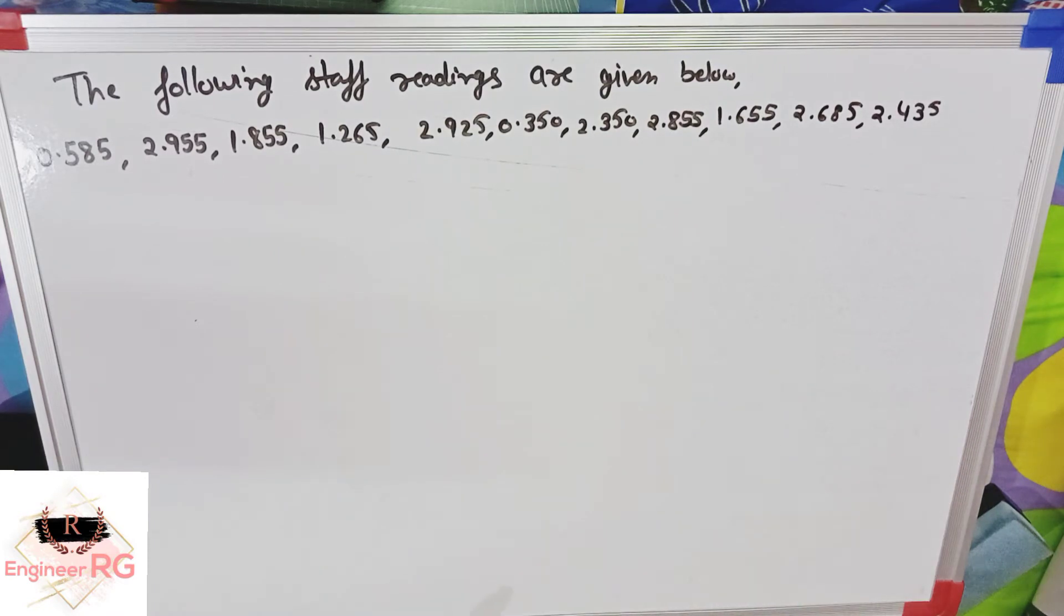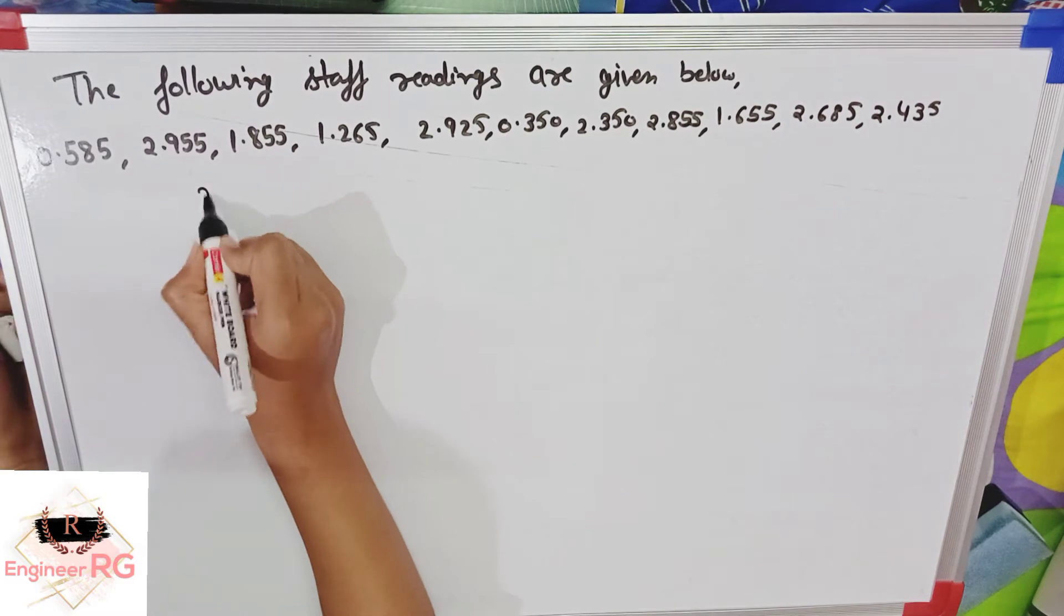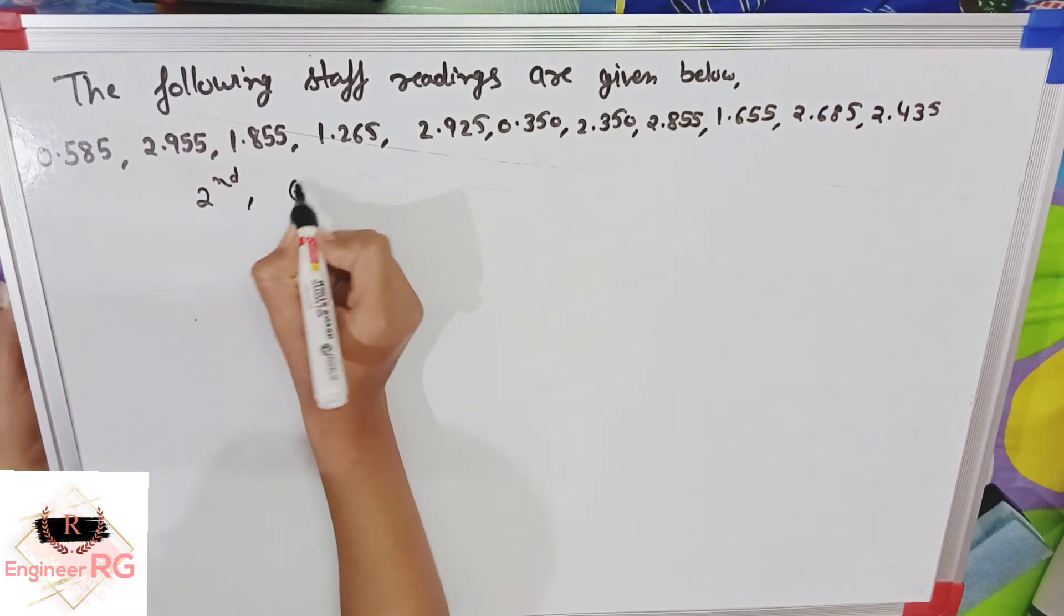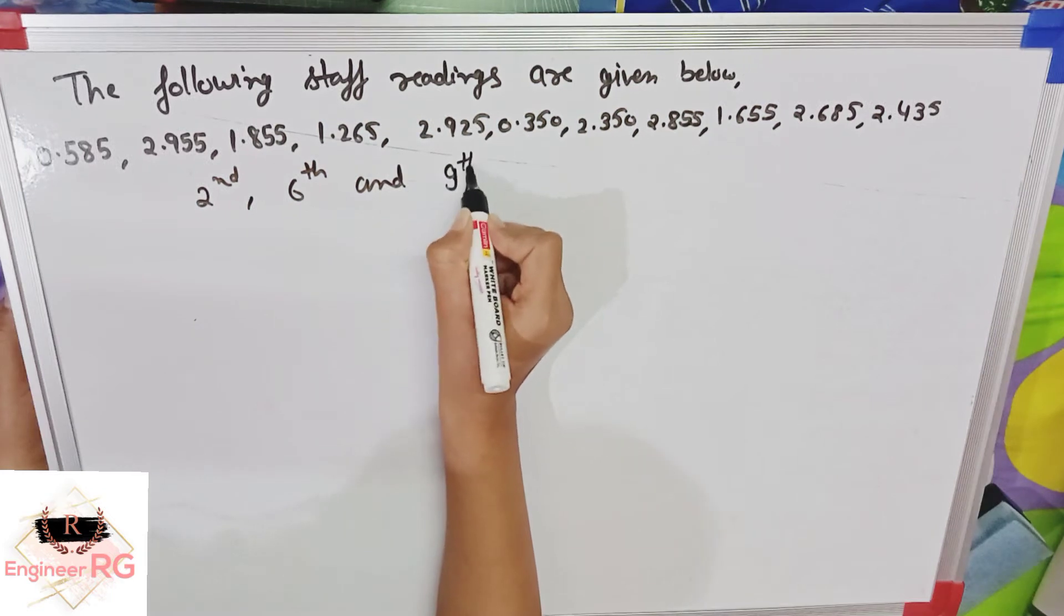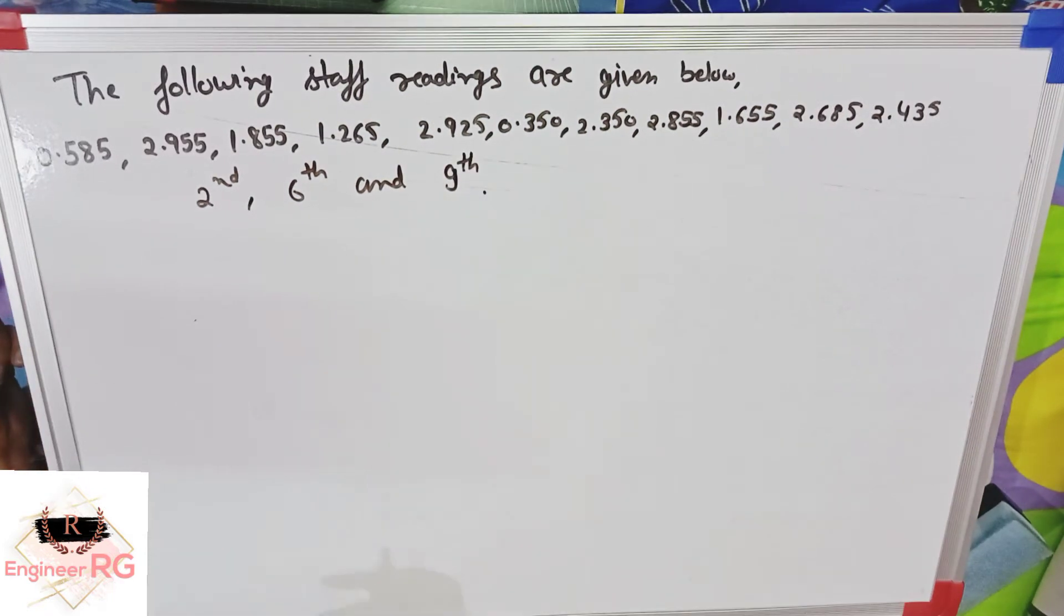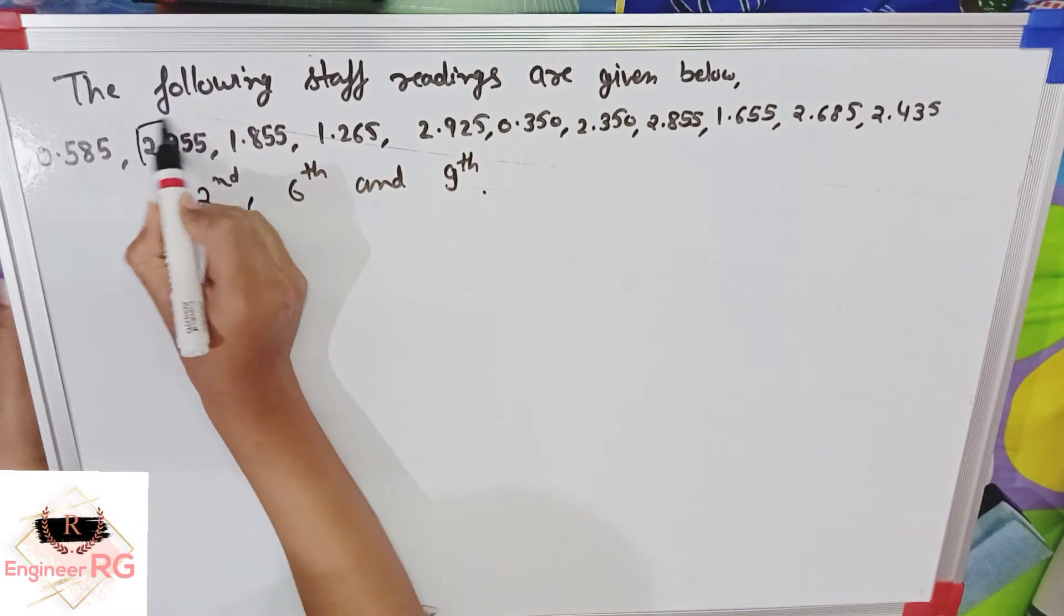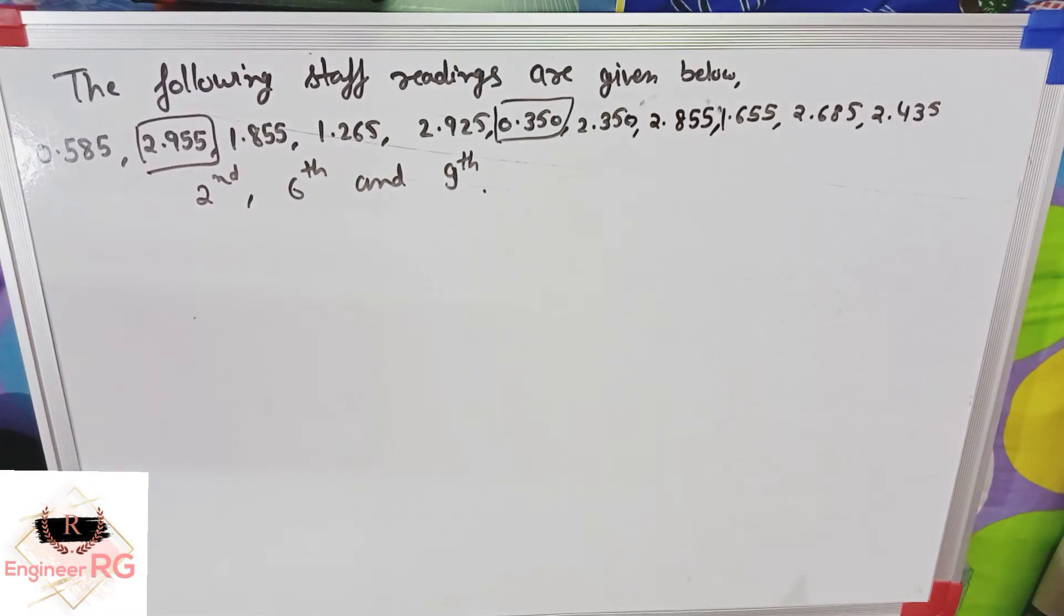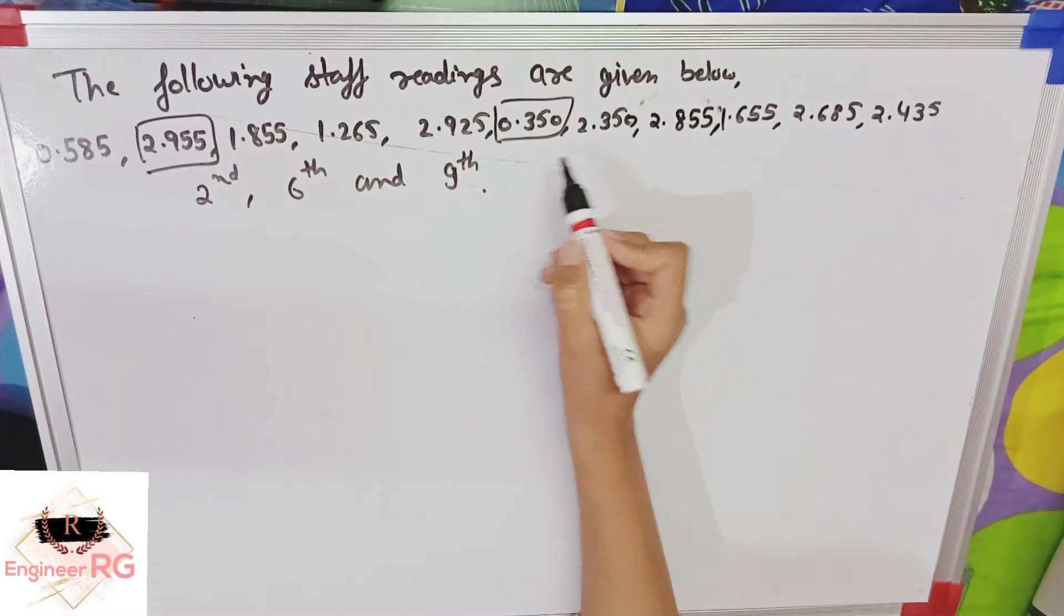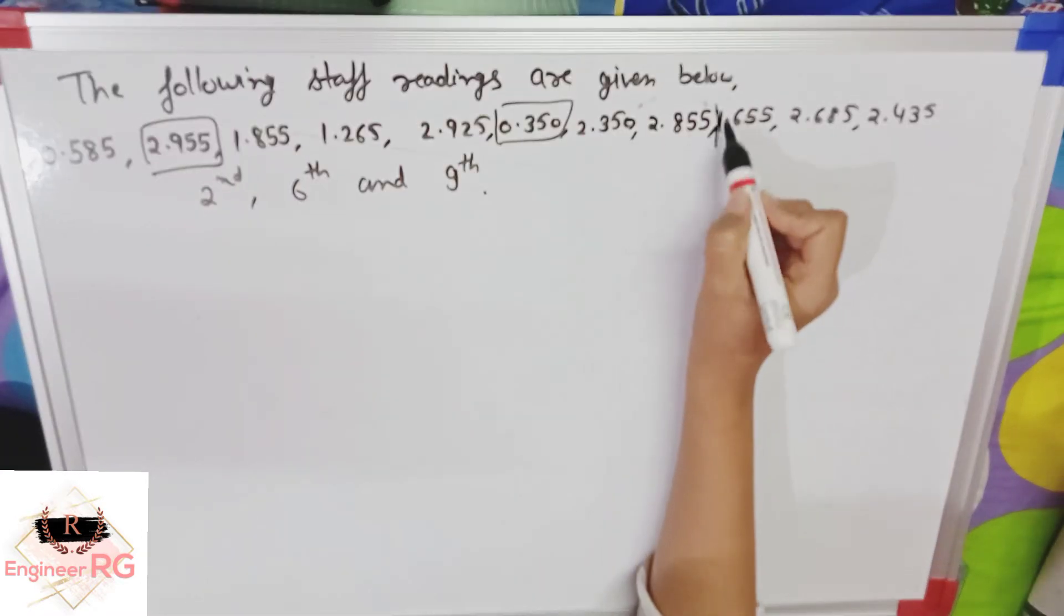Now, let's see where the staff moved. The points are 2nd, 6th, and 9th. In reading, the staff removed. So, 2nd is 3rd, 4th, 5th, 6th. So, this is 6th, 7th, 8th, 9th.